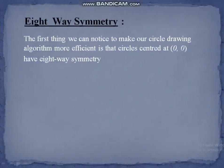The first thing we notice to make our circle drawing algorithm more efficient is that a circle centered at (0, 0) has 8-way symmetry. That is, if we know one point on the circumference, we can calculate the other 7 octants from the 8-way symmetry.